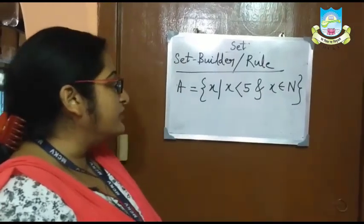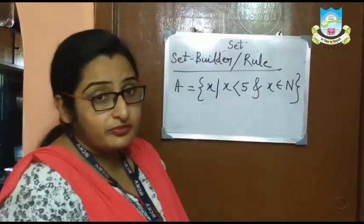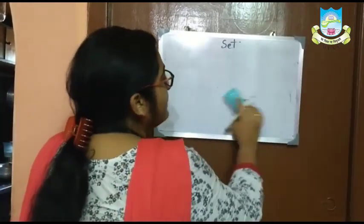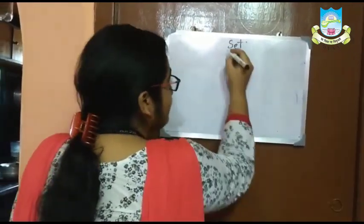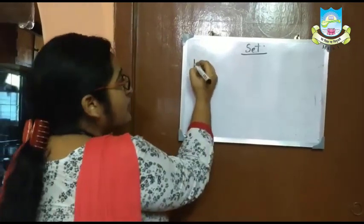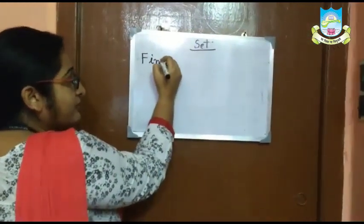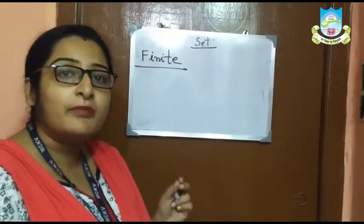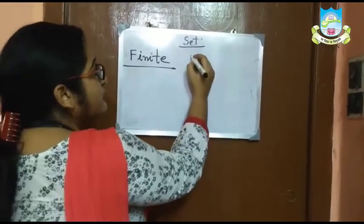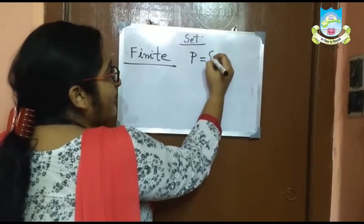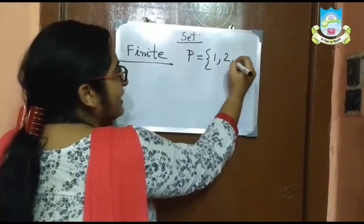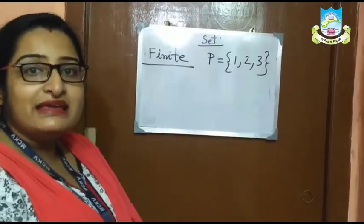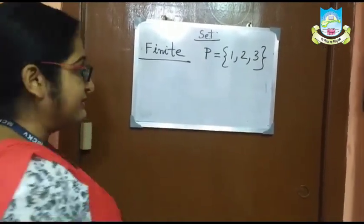Now we will learn about different types of sets. There are two different types: finite set and infinite set. A finite set is a set in which we can count the number of elements. For example, set P having the elements 1, 2 and 3 — as we can count the number of elements, P is considered a finite set.